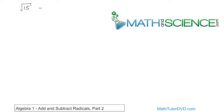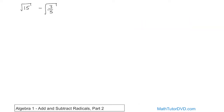For instance, if you have the square root of 15 minus the fraction 3 fifths under a square root, how would you approach that? In the previous section, we did adding and subtracting of radicals, and we learned that the radicals have to be the same to add or subtract them. Clearly, 15 is totally different than 3 fifths, so we can't add or subtract these straight away.